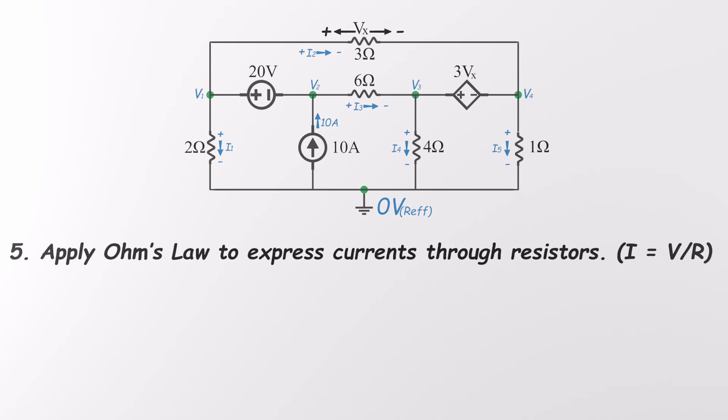Step five, time to bring in Ohm's law to write the current equations for each resistor. Quick reminder, Ohm's law says current equals the voltage difference across a resistor divided by the resistance. Let's go resistor by resistor.